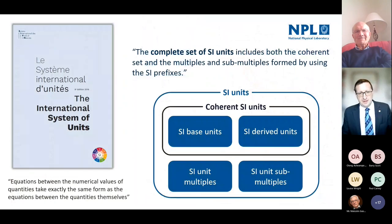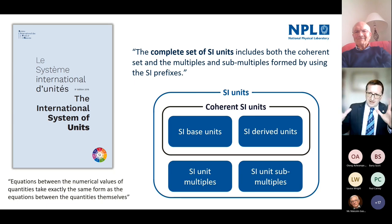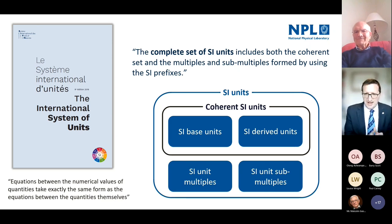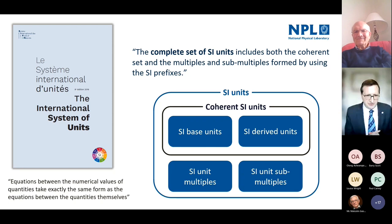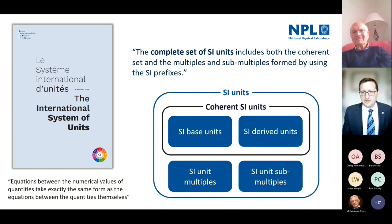The SI brochure — the authoritative document on how the international system of units works — tells us clearly that the complete set of SI units includes both the coherent set and the multiples and sub-multiples formed using the SI prefixes. The SI units in their totality include the base units, derived units, SI unit multiples and SI unit sub-multiples. Coherent units mean that equations between numerical values take exactly the same form as equations between the quantities themselves; units using multiples and sub-multiples of prefixes are not coherent.